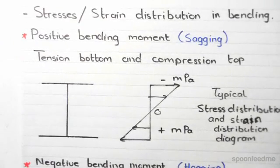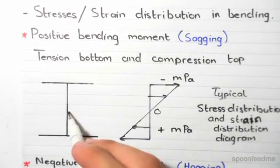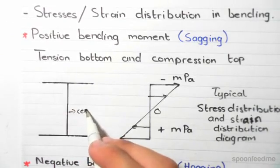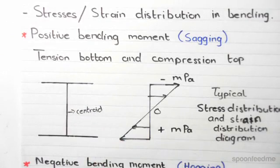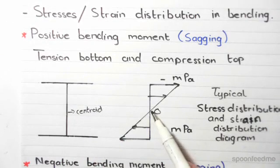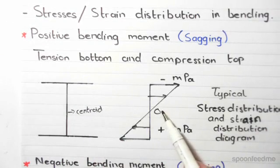Notice a bit of properties. So this is the centroid over here. At the centroid, or in other words the neutral axis, we always have zero strains and zero stresses.